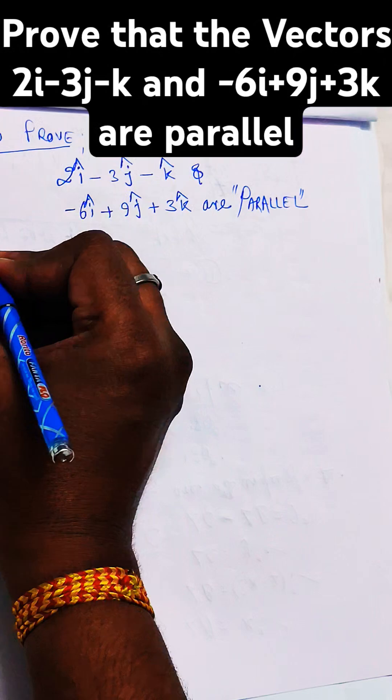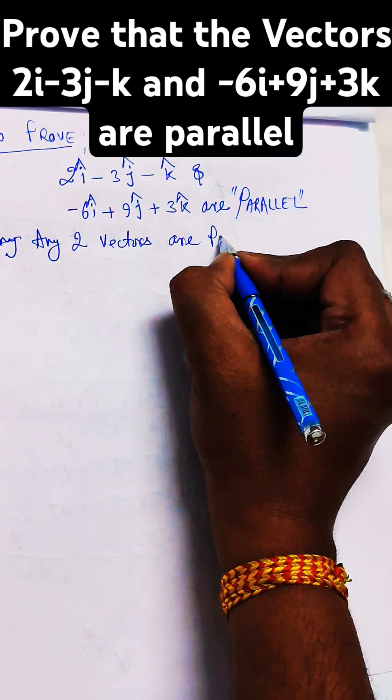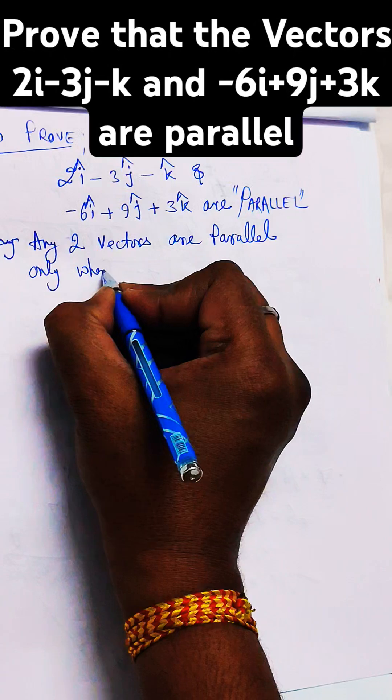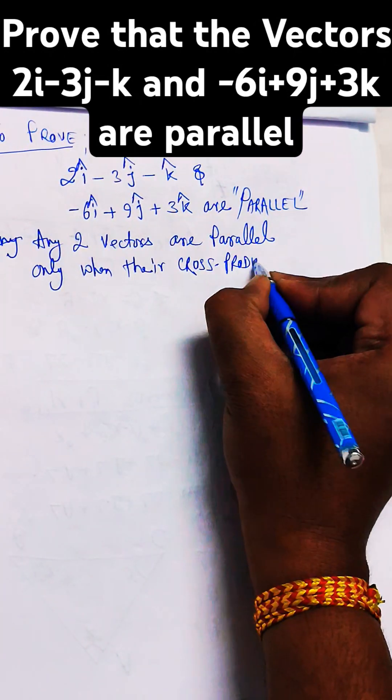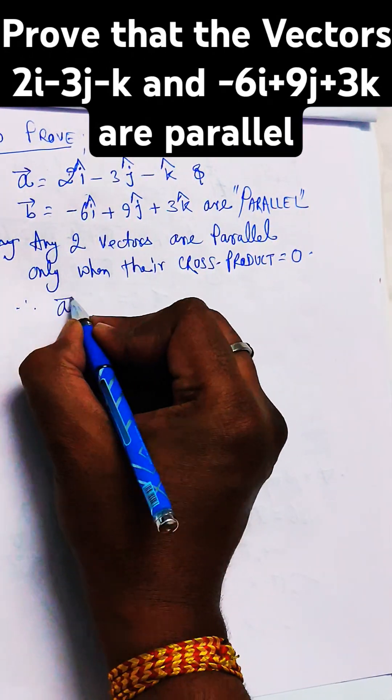We know that for any two vectors, they are parallel only when their cross product is zero. So if the first vector is A and the second vector is B, then A cross B should be equal to zero.